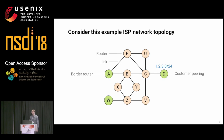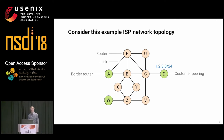I'd like you to put yourself in the shoes of an Internet Service Provider. You own this network and have a couple of border routers. More specifically, you provide API Transit Services to one customer that phones you and tells you their clients have issues reaching their network. So, what do you do?